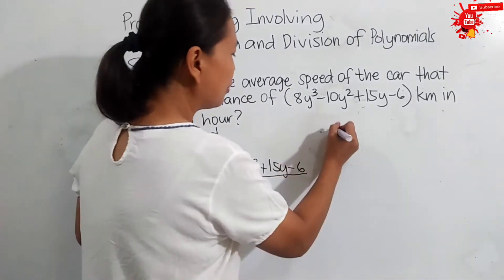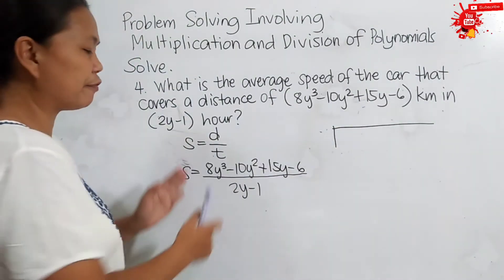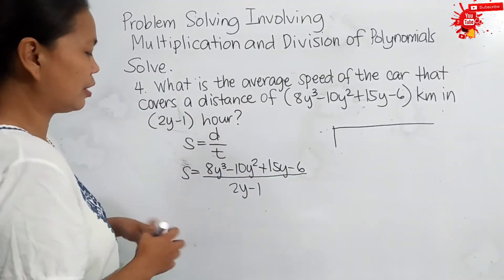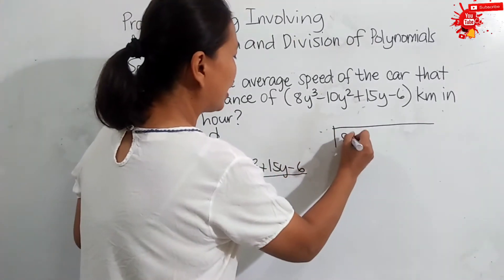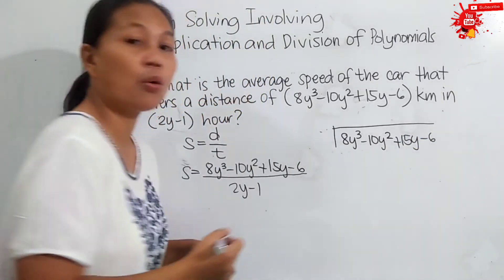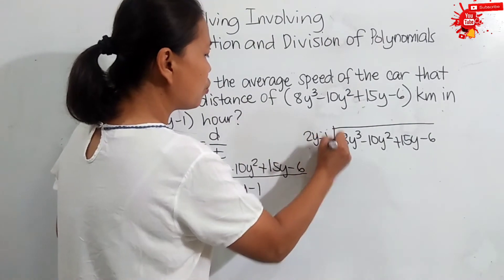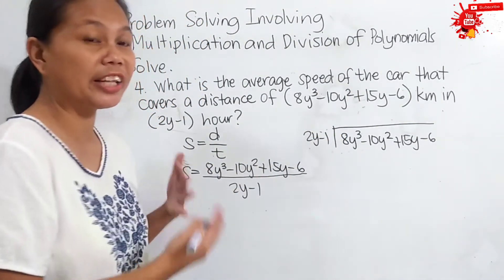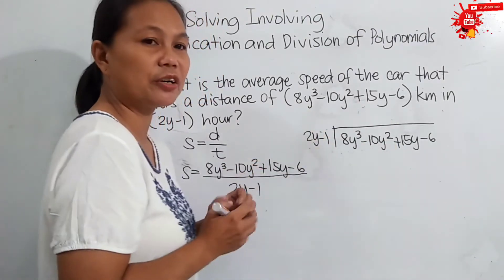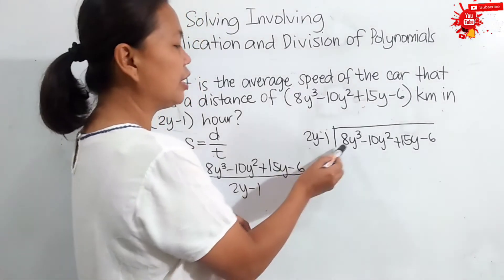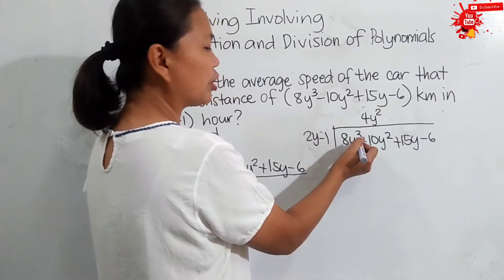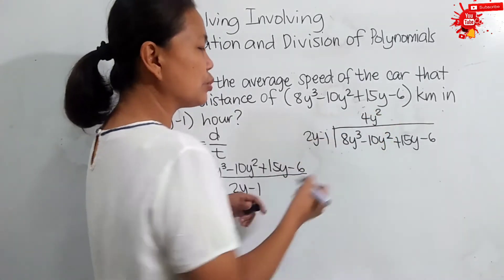S is equal to the distance — 8y cubed minus 10y squared plus 15y minus 6 — all over the time which is 2y minus 1. Before writing it in the division symbol, let's confirm both expressions are in standard form: degrees 3, 2, 1, 0 for the dividend and 1, 0 for the divisor. So, the first term of the dividend divided by the first term of the divisor: 8y cubed divided by 2y — 8 divided by 2 is 4, and y cubed divided by y is y squared, giving us 4y squared.